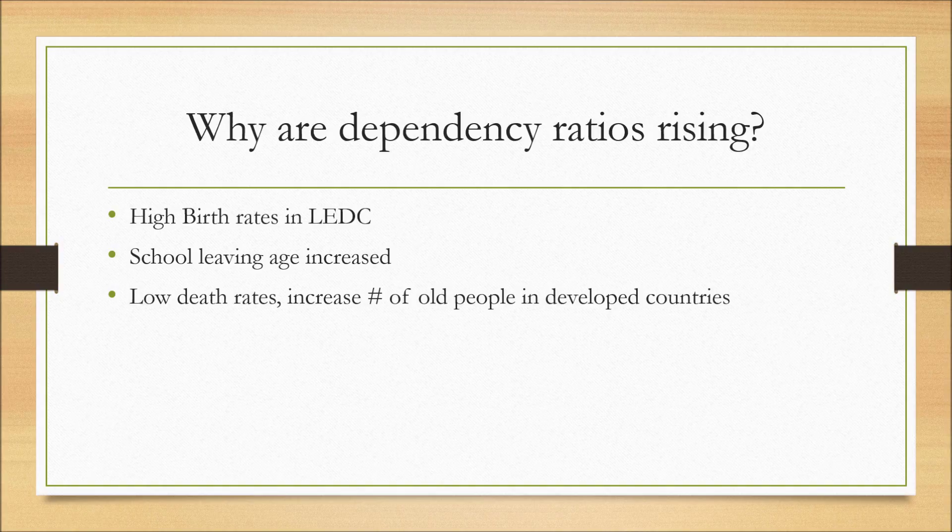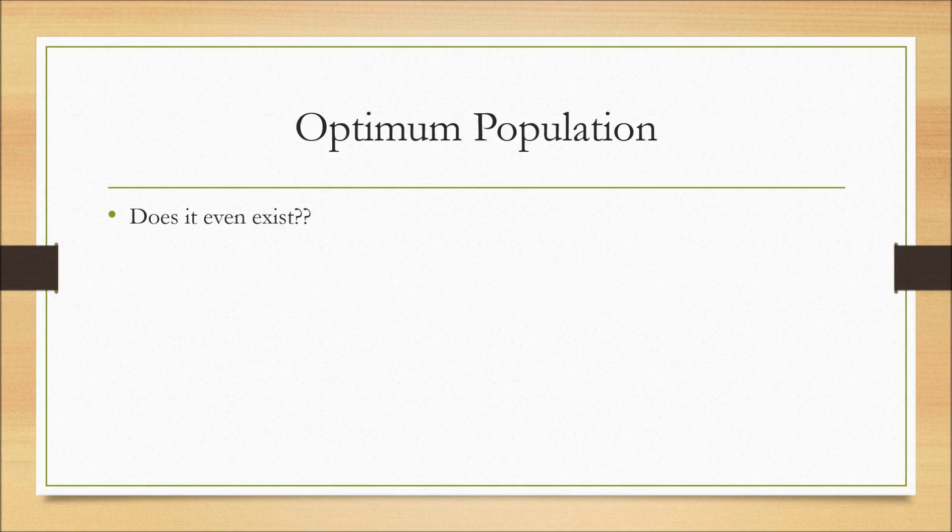And finally there are low death rates and growing number of old people in developed economies. So does optimum population even exist? The concept or the term optimum population is meant by allowing a country to maximize output per head of population from its existing resources.